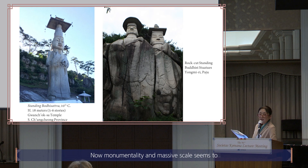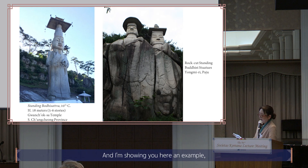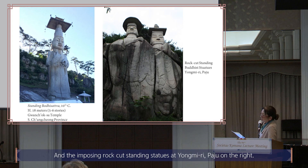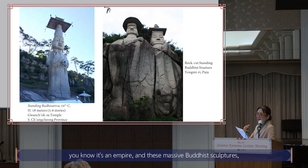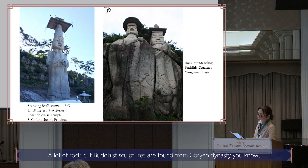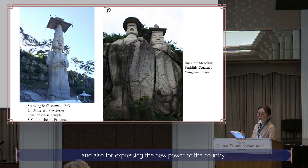Monumentality and massive scale seem to have been of interest to Koryo sculptors, as evident in the numerous extant Buddhist statues around the country. The Guanchoksa Bodhisattva measures 18 meters high. And the imposing rock-cut standing statues at Yongmiri Paju are another example. A lot of rock-cut Buddhist sculptures are found from the Koryo dynasty, marking places and serving as an icon for the people — for unity and expressing the new power of the country.